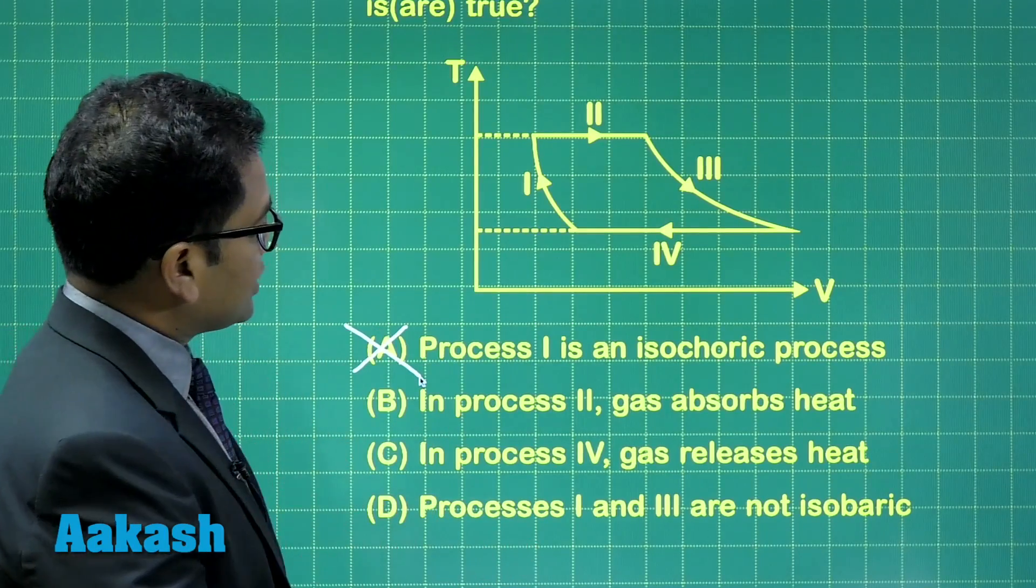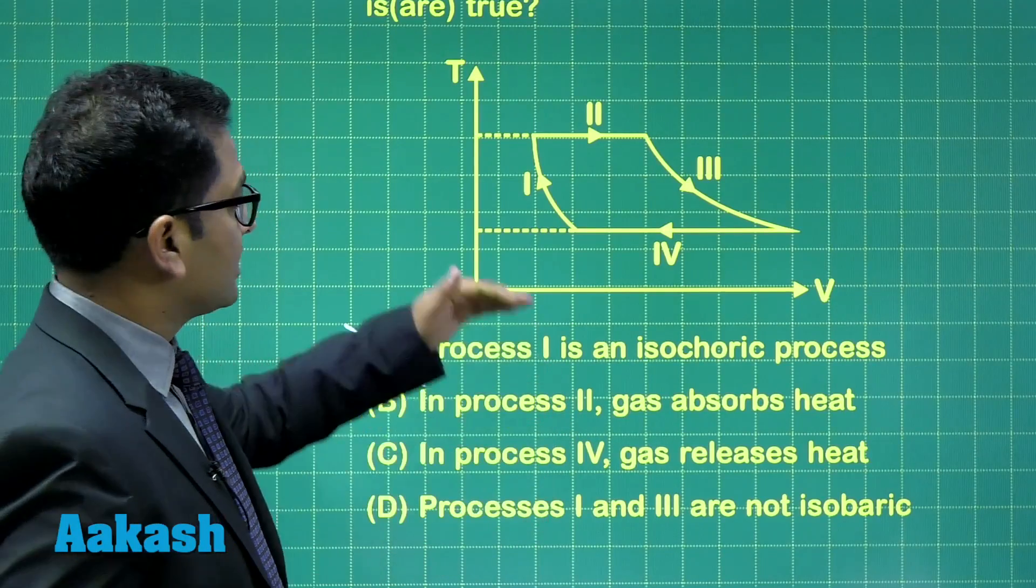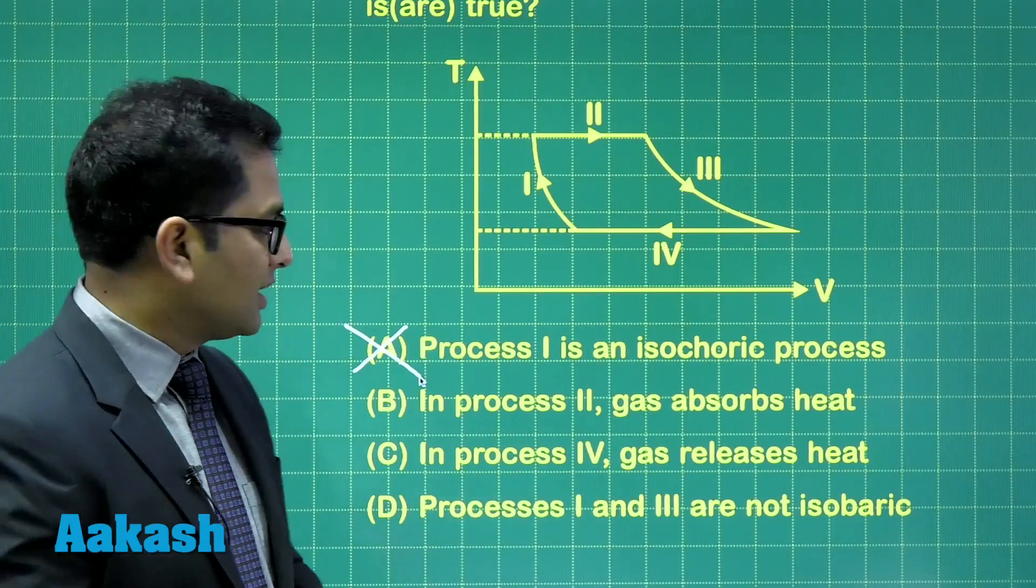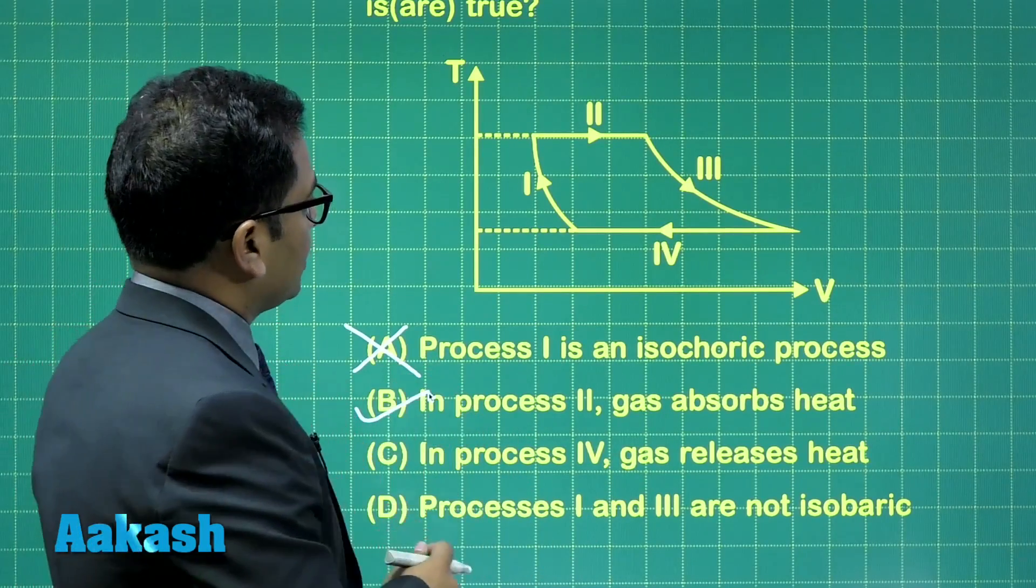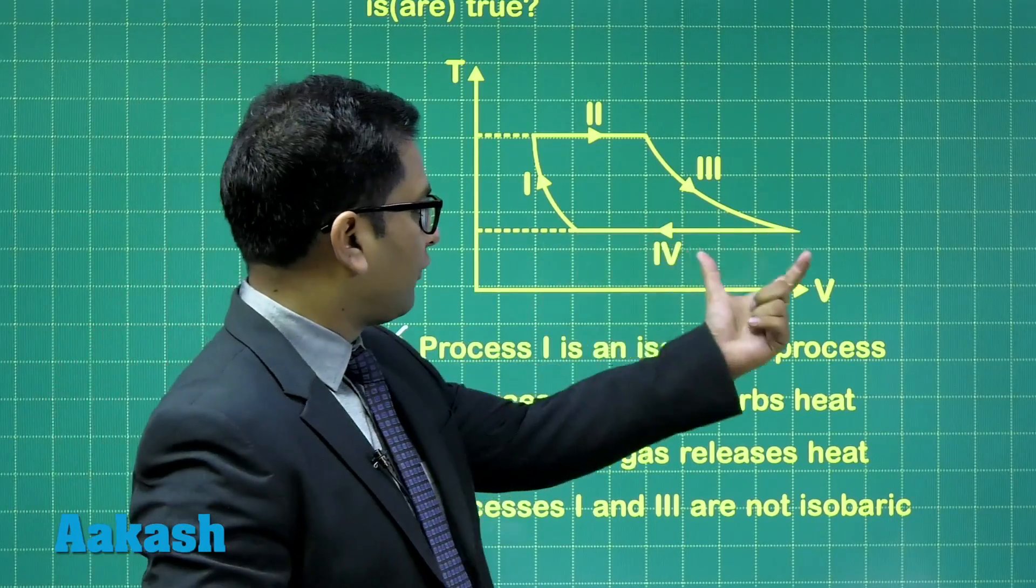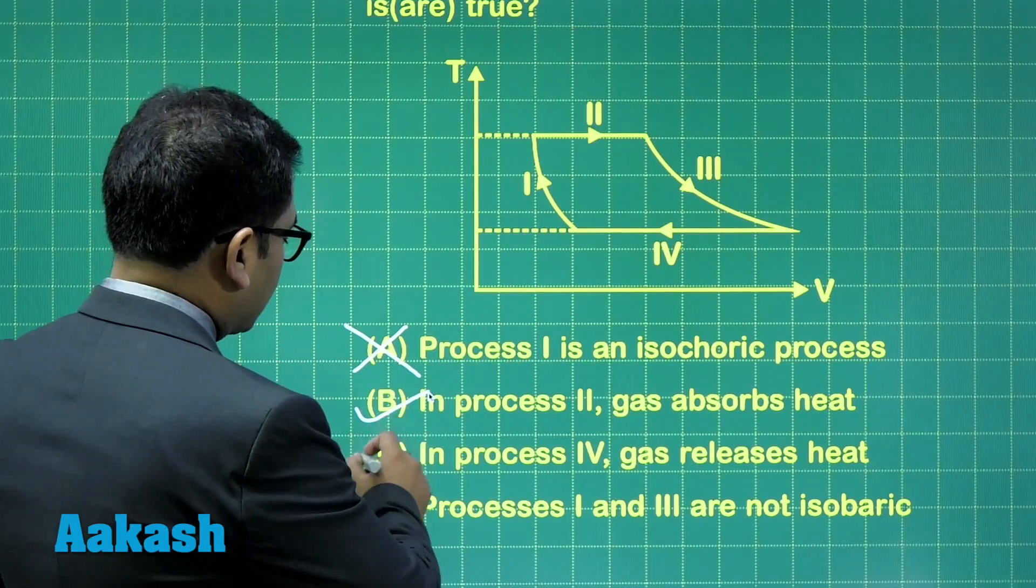Option B: in process two, gas absorbs heat. Yes, it's true, because it's an isothermal expansion, and in an isothermal expansion, the gas has to absorb heat. If process two absorbs heat, process four has to release heat, because that's an isothermal compression.